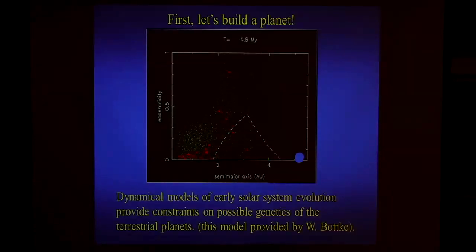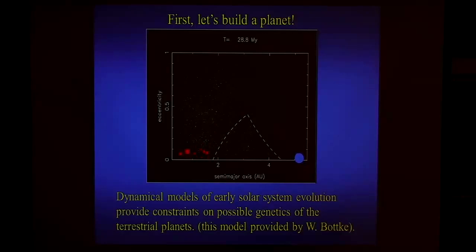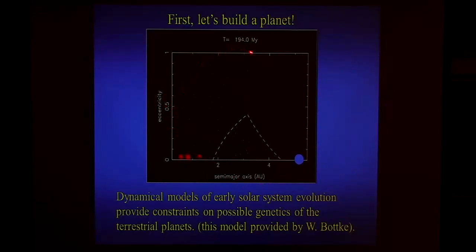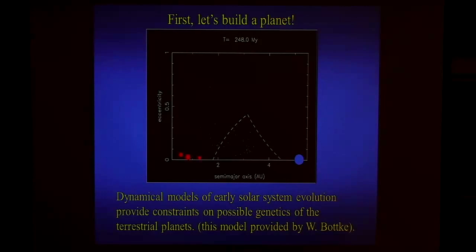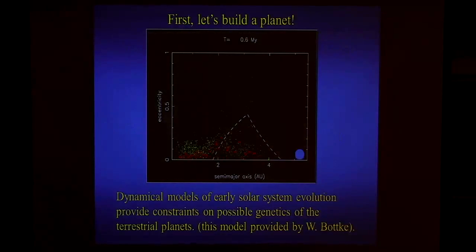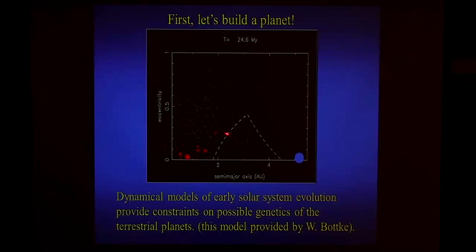I thought I'd start by building a planet. This is an old n-body simulation produced by Bill Botky about ten years ago. The axes are semi-major axis in astronomical units and eccentricity, with time shown here. You're seeing the construction of terrestrial planets produced by this particular model run, with Jupiter sitting in the same place. You can see it building bigger bodies — this is the oligarchic growth discussed earlier in the week, with bodies being built from each other.